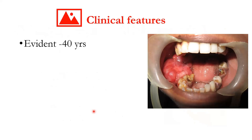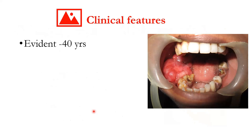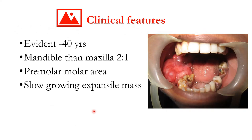Clinically, CEOT is expected to be evident within the oral cavity at around the fourth decade of life. The mandible is the most commonly affected jaw compared to the maxilla, with a ratio of about two to one. The area affected is the posterior region — the premolar and molar area. It is usually associated with an impacted tooth and could be a slow-growing, expansile mass.